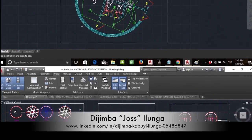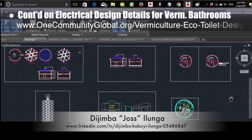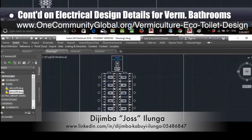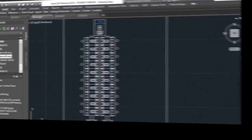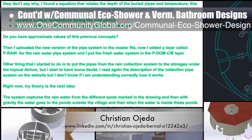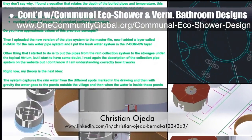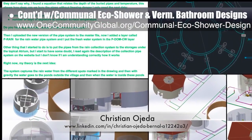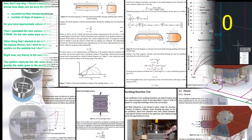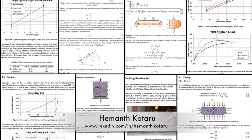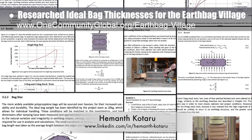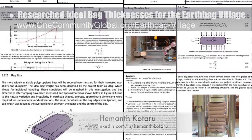Joss Ilunga, electrical engineer, completed his third week working on the electrical design details for the vermiculture bathrooms. This week's focus was version 1.0 of the breaker panel and updating the master file to include section views. Christian Ojeda, mechatronic engineer, completed his 22nd week helping with the heat recycling, communal eco-shower, and vermiculture bathroom designs — this week designing the connection specifics for the plumbing designs so they connect properly with the shower and vermiculture structures. Heymonth Kodera, structural engineering master's student, joined the team and completed his first week by researching ideal bagged thicknesses for the earth-bagged village, with some of this research shown in his initial report.